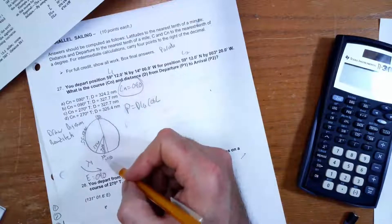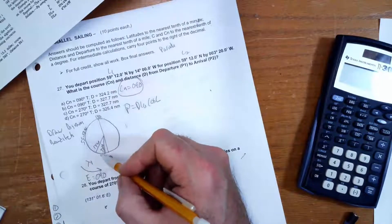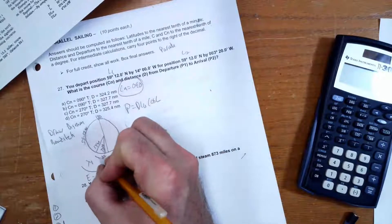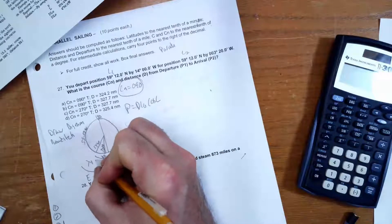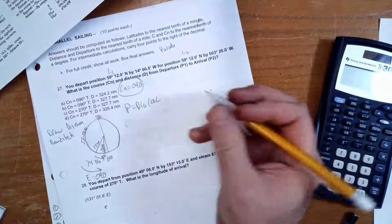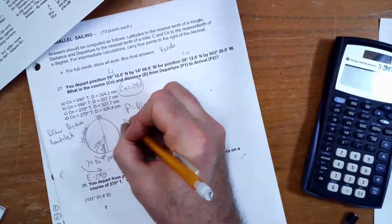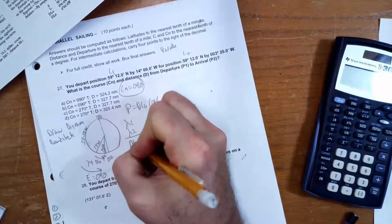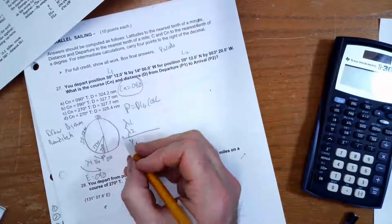Well, they didn't give us DLo directly, but they inferred it. DLo is this. The change in longitude from longitude 1 to longitude 2. Since they're on the same side, I'm going to subtract.